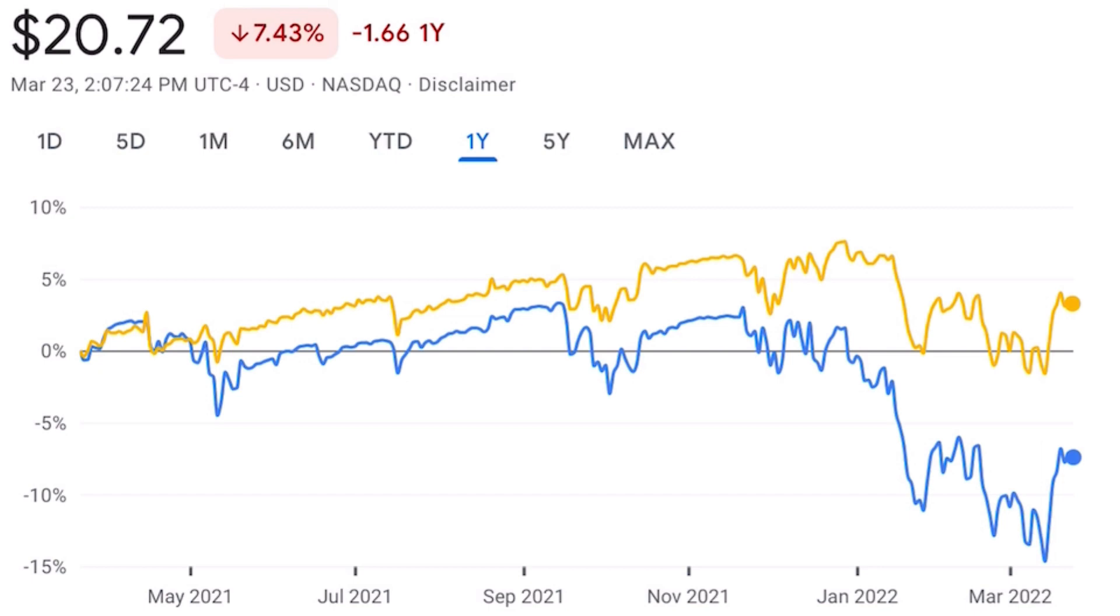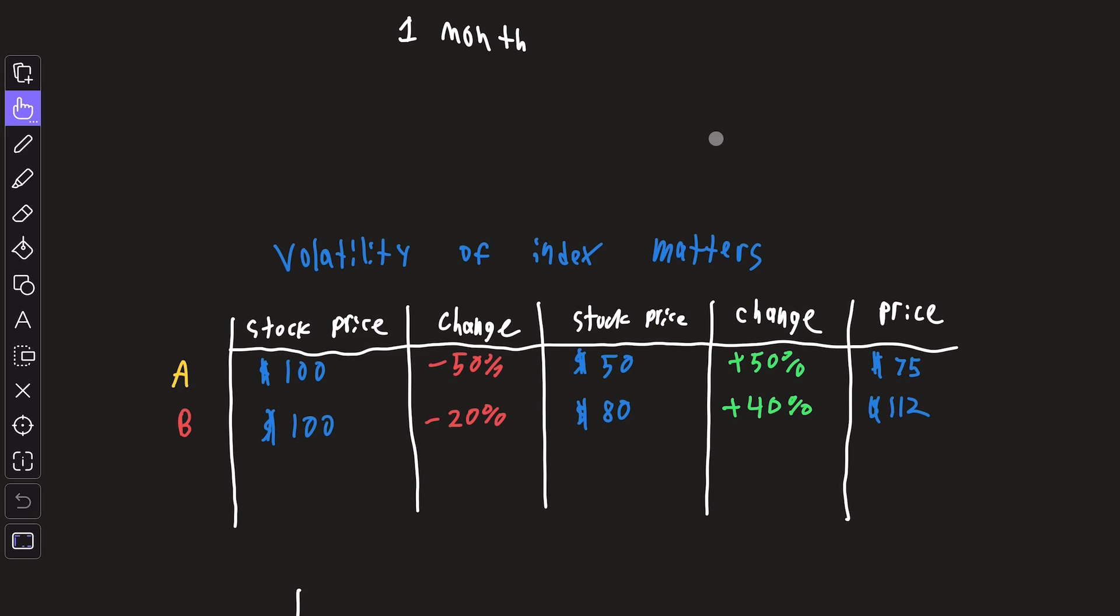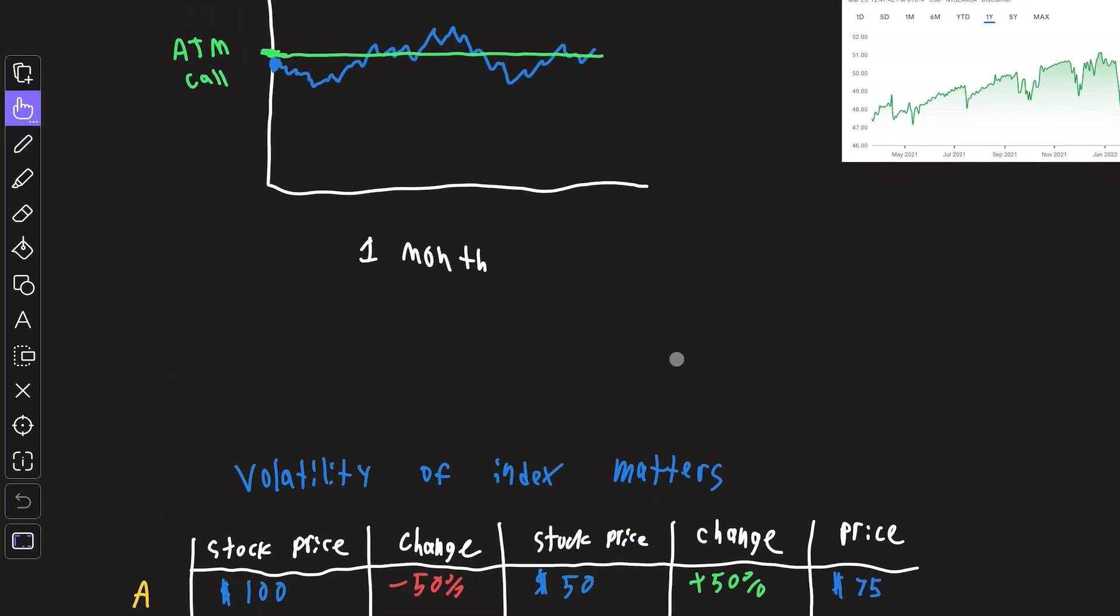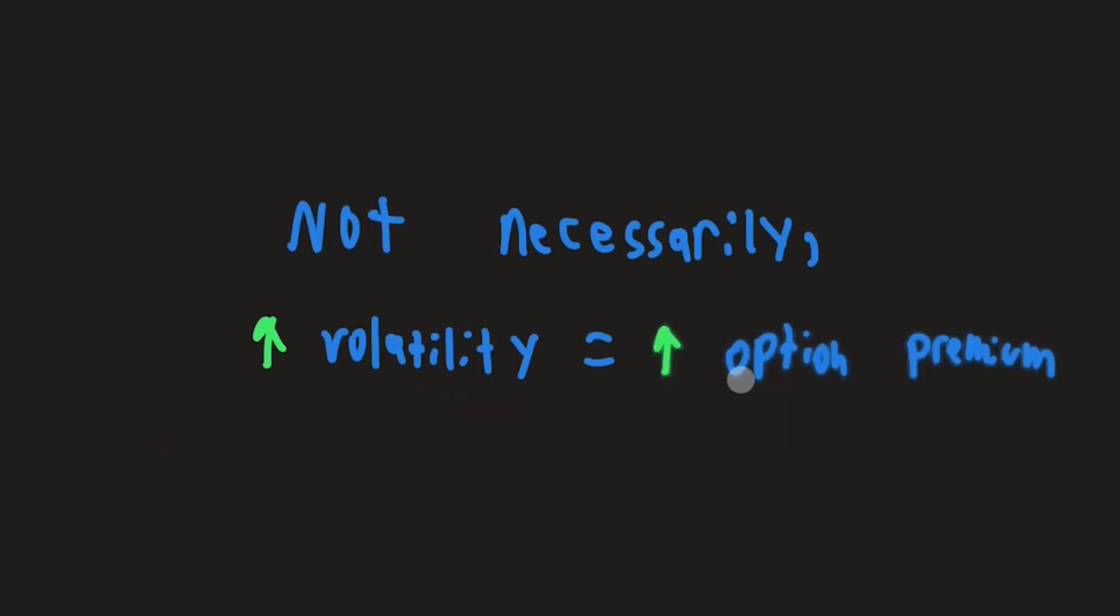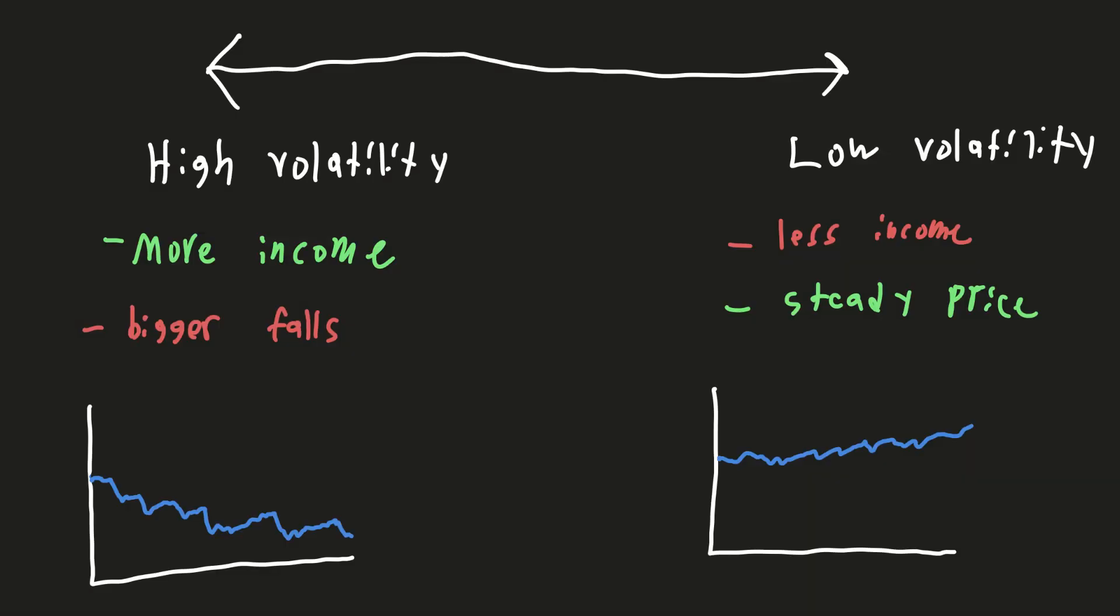And if you plot these two investments on a chart, it should look something like this, B being the better investment. And that's even though it had less price appreciation because it was less volatile to begin with. And if you take a look at XYLD and QYLD side by side, it's basically the same graph.